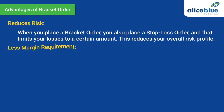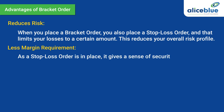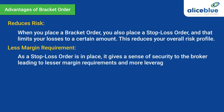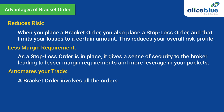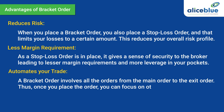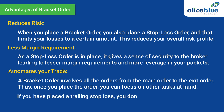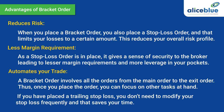Next is that it has less margin requirement. As a stop loss order is in place, it gives a sense of security to the broker, leading to lesser margin requirements and more leverage in your pockets. The next one is that it automates your trade. A bracket order involves all the orders from the main order to the exit order. Thus, once you place the order, you can focus on other tasks at hand. If you have placed a trailing stop loss, you don't need to modify your stop loss frequently and that saves you time.